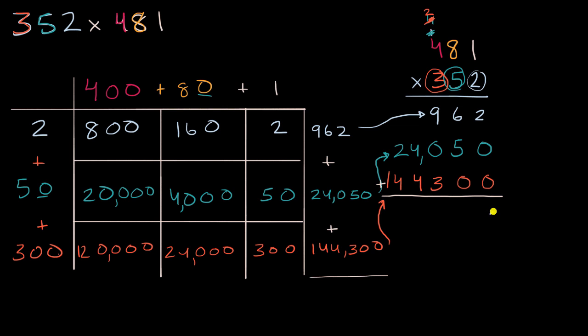So 2 plus zero plus zero is 2, 6 plus 5 is 11, regroup that 1, so 1 plus 9 plus 3 is 13, and then 1 plus 4 plus 4 is 9, 2 plus 4 is 6, and we have a 1 right over there, so we get 169,312. And so when you just learn this method, the standard algorithm, it might seem like a little bit of magic, but all you're doing is you're going to each of these places, and you're distributing it, you're multiplying it times 400 plus 80 plus 1, exactly what we did right over here.